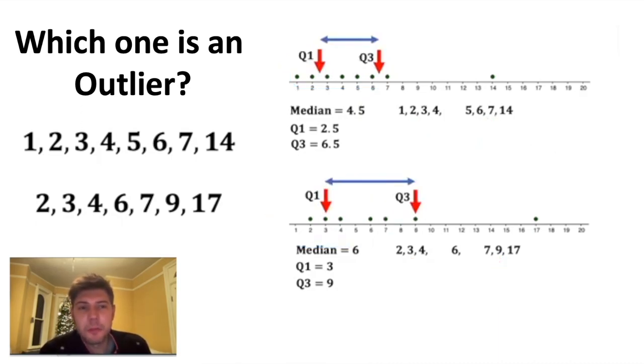Next, we're interested in how far apart the Q1 and Q3 are. This is called the interquartile range or IQR. We figure that value out by doing the third quartile minus the first quartile, and we get four or six. The next step: we multiply this IQR times 1.5. On top, 1.5 times four equals six. On bottom, it equals nine.